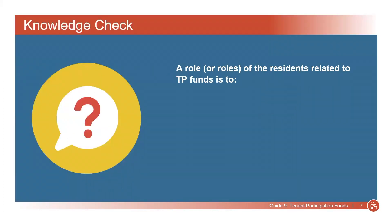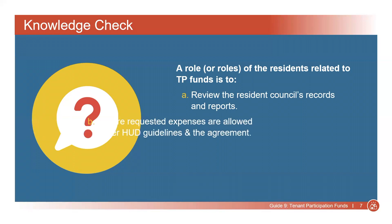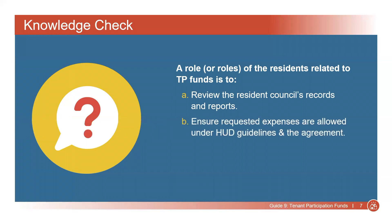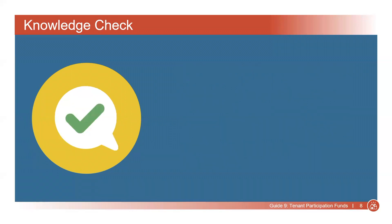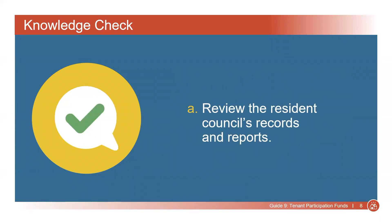Let's do a quick knowledge check. A role or roles of the residents related to TP Funds is to: A. Review the Resident Council's records and reports; B. Ensure requested expenses are allowed under HUD Guidelines and the Agreement; C. Properly distribute funds; or D. All of the above. The answer is A. Residents should review the Resident Council records and reports to ensure that the funds are being properly managed.